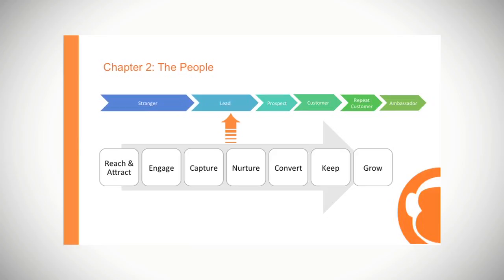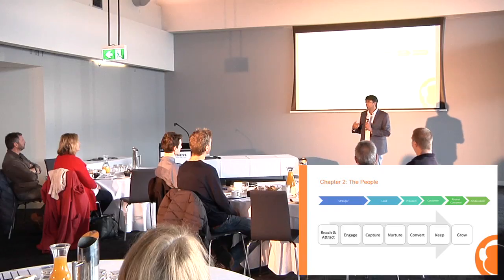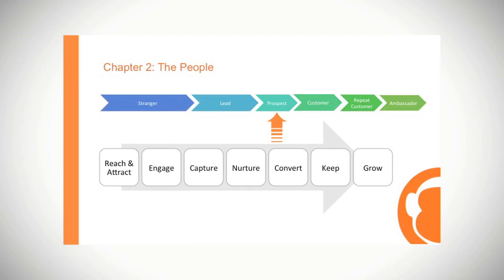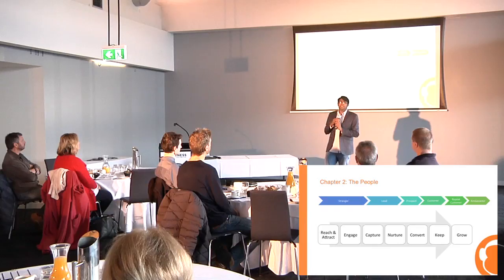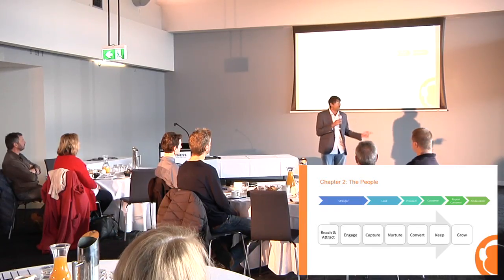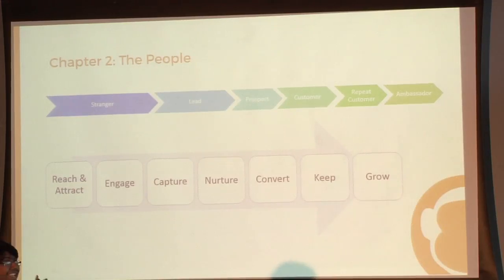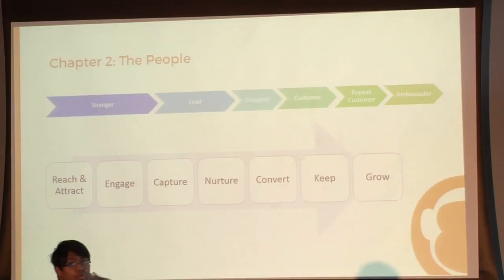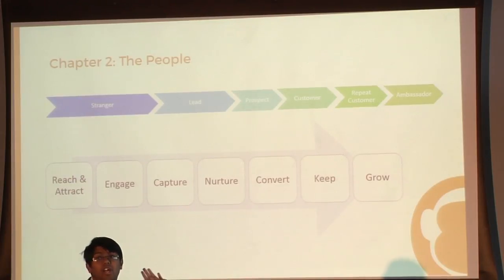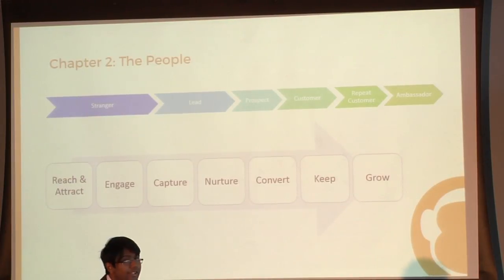Once you nurture these leads, at some stage they ultimately turn into prospects, and then your sales team converts them into customers. Once they are converted into customers, the goal is not to just sell them one time — you want to convert them into repeat customers and ultimately into ambassadors. Sales and marketing automation is all about taking strangers and turning them into loyal brand ambassadors.